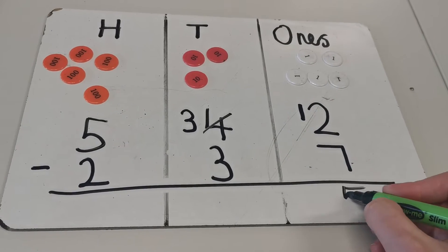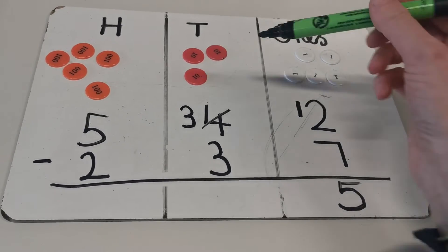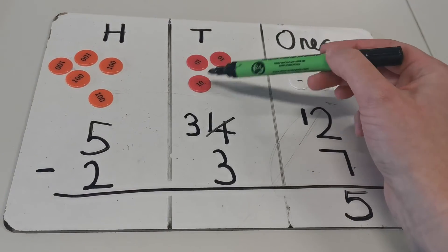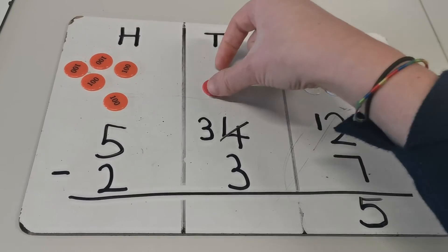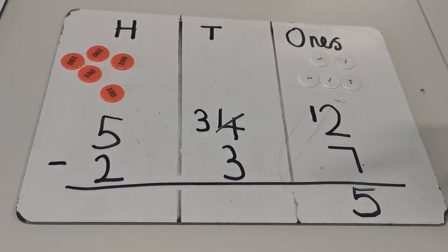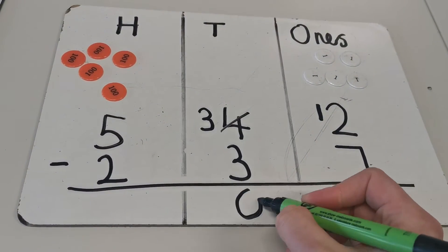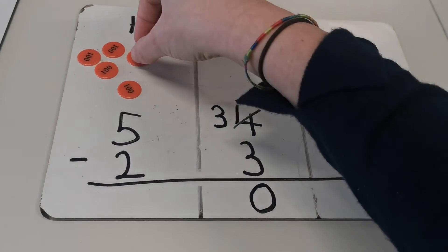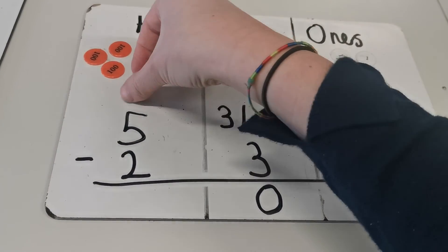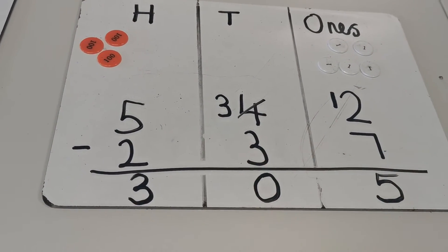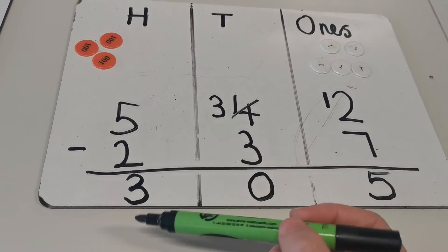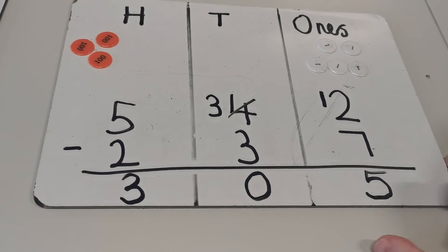Now I have three tens and I need to subtract three tens: one, two, three, they're all gone. So I need to say I have zero tens left. Then I had 500 and I need to subtract 200. Can you see then I'm left with 300? So the answer to the question is 305.